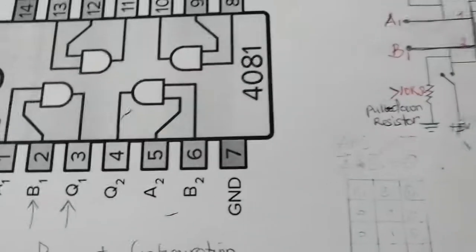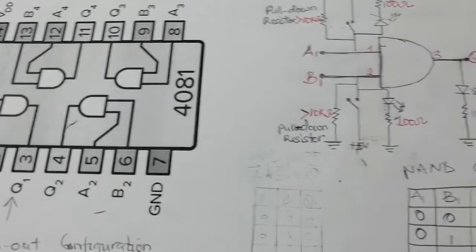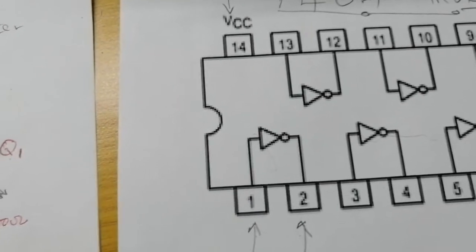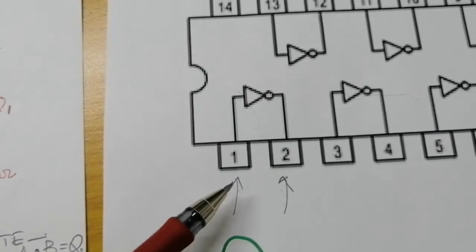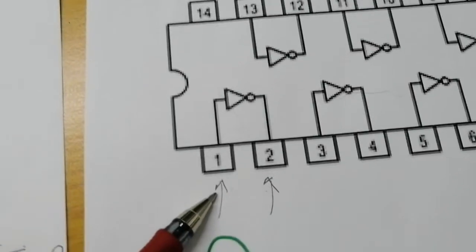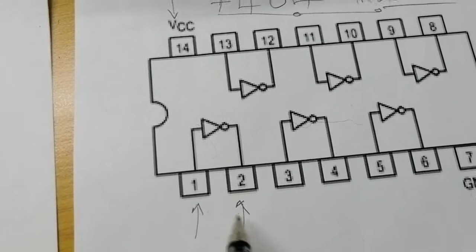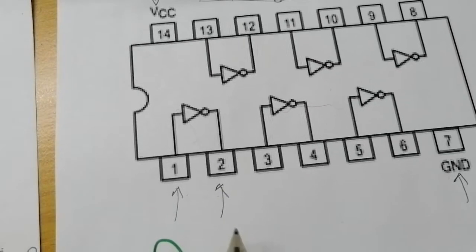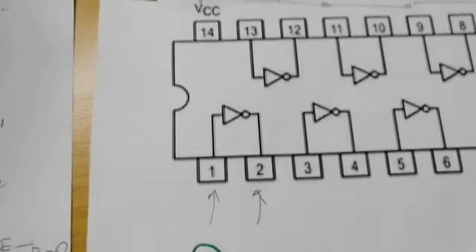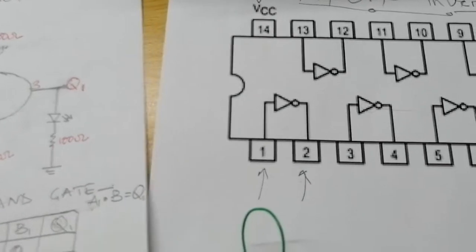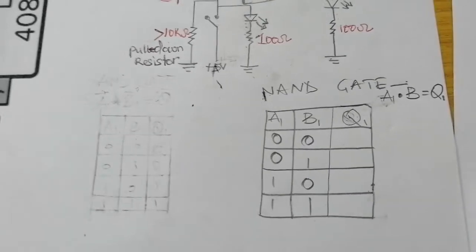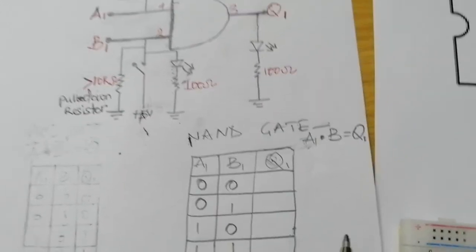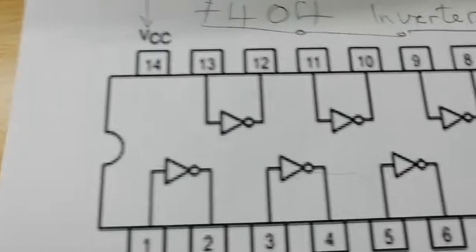When you're done with your AND gate, you just attach an inverter. The way the inverter works is you take the output from your AND gate and feed it into input pin 1 of the 7404 inverter. Then you take the output to the LED in series with a resistor, then to ground. Ground pin 7 and provide power to pin 14. This is our truth table: A NAND B — A times B gives you Q.